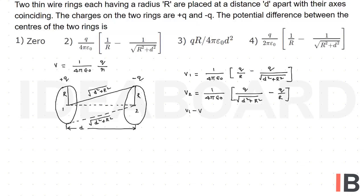Then taking V₁ minus V₂, then we will get q by 2πε₀ times [1/r minus 1/√(d² + r²)].